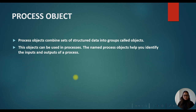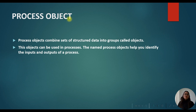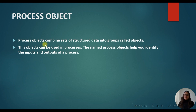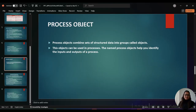Hello everyone, welcome to my YouTube channel Data Tweaking. My name is Sakshi and in today's session we will talk about the process object. In the last tutorial we already covered how to create a process, what is the use of process, interview questions on process, what is application integration, and how to install application integration. Now in this second tutorial we will talk about the process object. A process object combines a set of structured data into groups called an object, and these objects can be used in processes. The process object helps you to identify the input and output of the process.